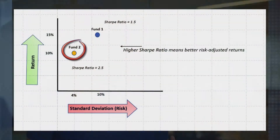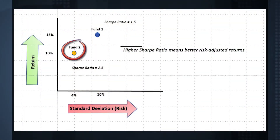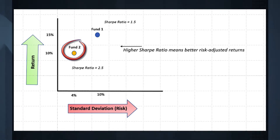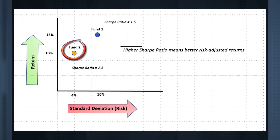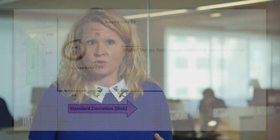Take an example of two funds: one with a return of 17% and one with a return of 12%. Let's assume the risk-free rate is 2%. It would seem at first glance that Fund 1 is a better performer, but Fund 1 was a much more volatile investment because the standard deviation is 15%. So actually it's Fund 2 that has a better risk-adjusted return.